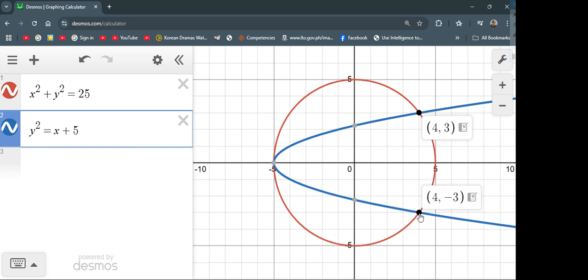When we say solution of our system of nonlinear equations, this refers to a point where our equations, once graphed, are intersecting each other. Another intersection here is negative 5, 0. So that's another solution. So there are three solutions of our system of nonlinear equations: negative 5, 0; 4, 3; and 4, negative 3.